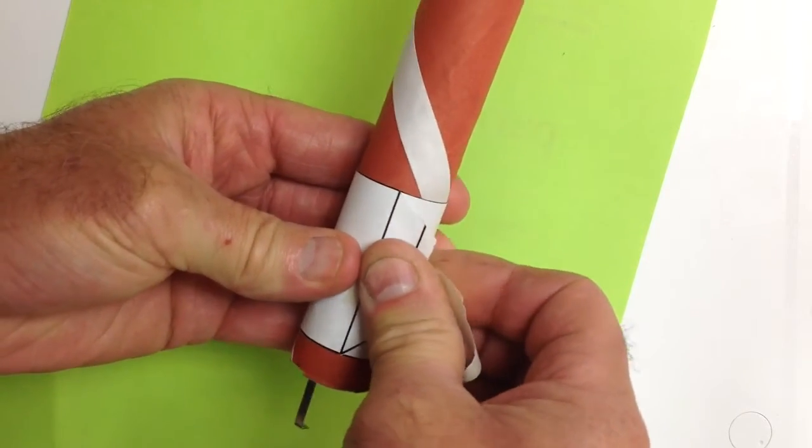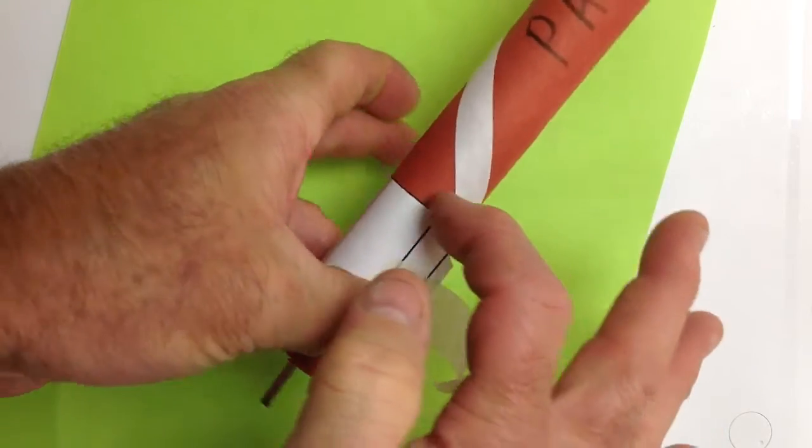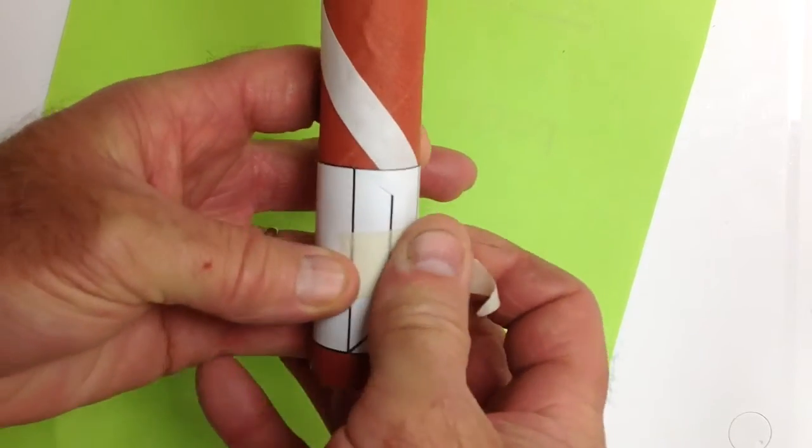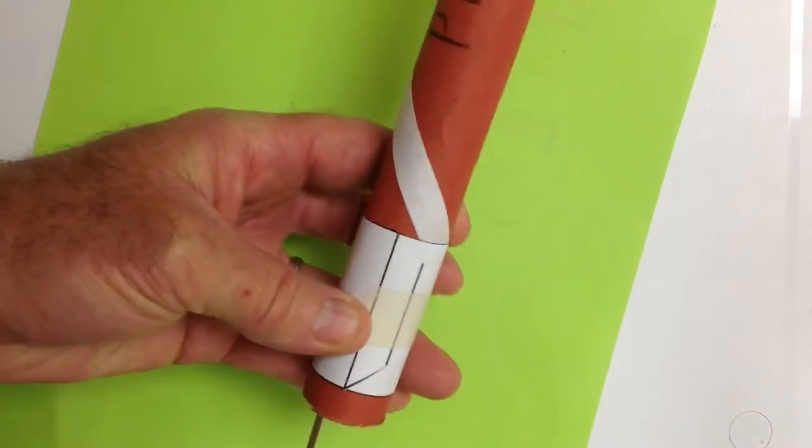And one way of checking that is that you can see that it's flat across over here and flat across over here. Make it nice and tight, and take that down like that.